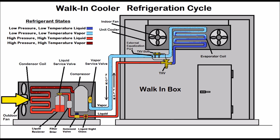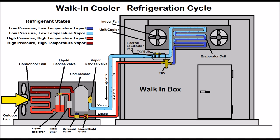Having a large saturated state in both the evaporator coil and the condenser coil is crucial to a refrigeration system working properly. You have to have complete vapor heading into the compressor — you want to make sure that you don't have any saturated refrigerant or straight liquid heading into the compressor. It has to be complete vapor only.